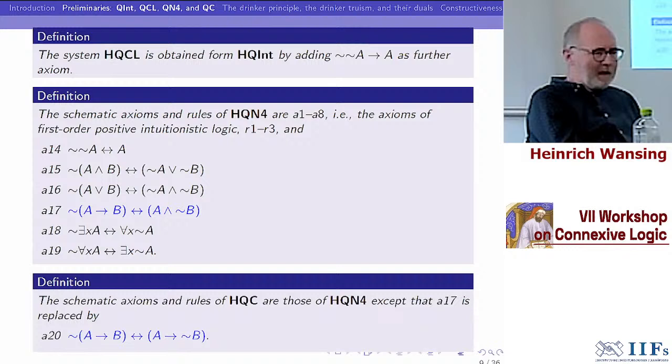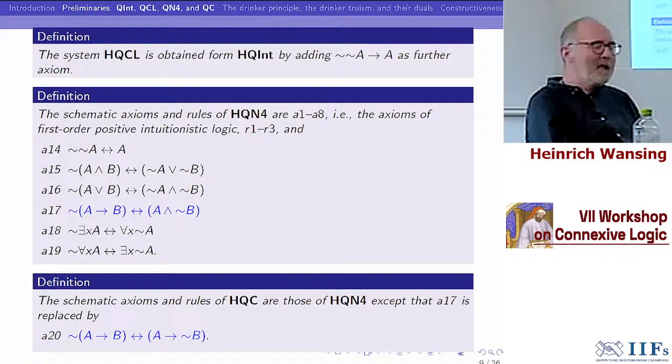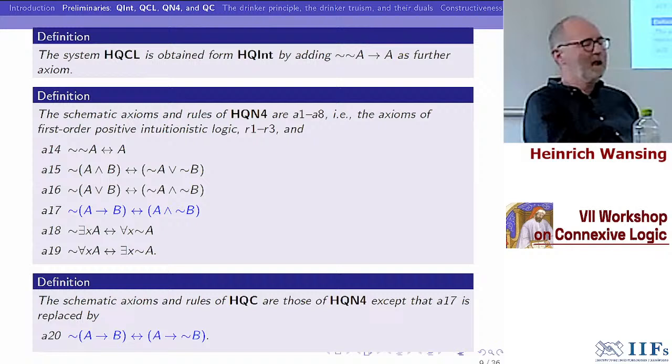The step from N4 to an axiomatization of first-order C is very simple. The two logics disagree about their understanding of negated conditionals. Instead of the axiom 'not A implies B is equivalent with A and not B,' we have 'not A implies B is equivalent with A implies not B.' These different axiomatizations give you a good understanding of the differences between classical, intuitionistic, Nelson, and first-order C.